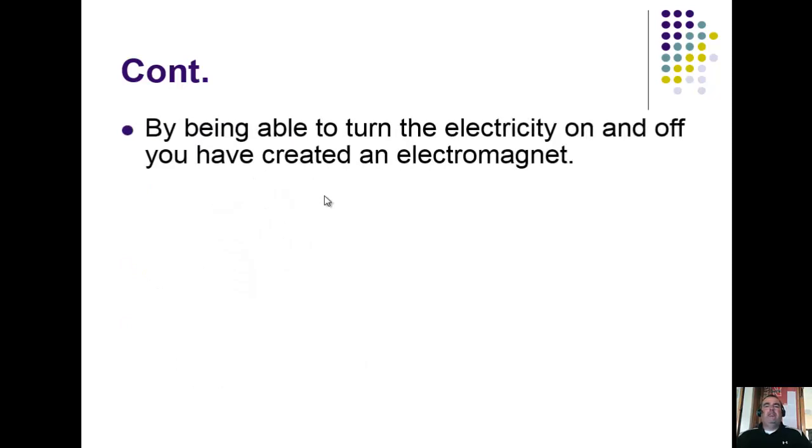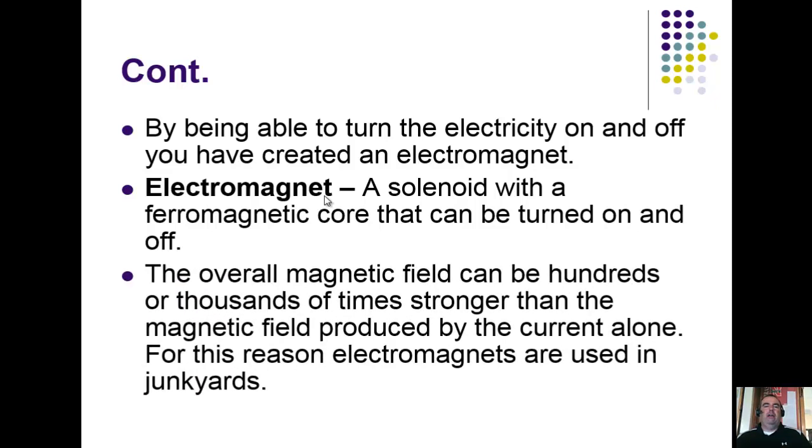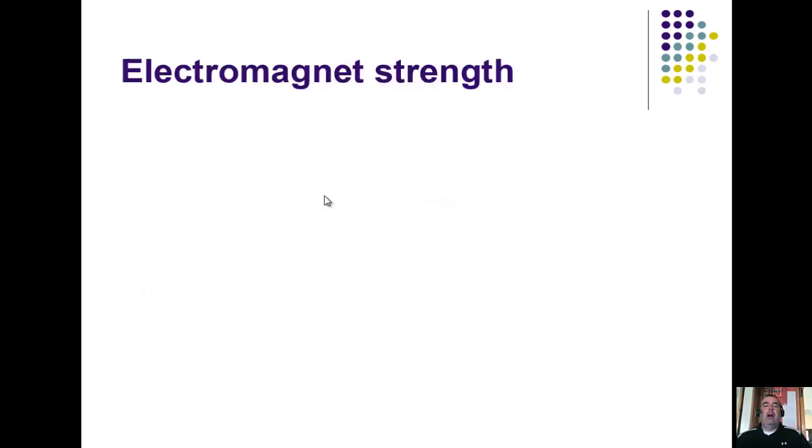By being able to turn that electricity on and off, you've created an electromagnet. An electromagnet is just a solenoid—that coiled wire with a ferromagnetic core that can be turned on and off. The overall magnetic field can be hundreds or thousands of times stronger than the magnetic field produced by the current alone. For this reason, electromagnets are used in junkyards because they can pick up many hundreds of thousands of times or apply more force to objects.